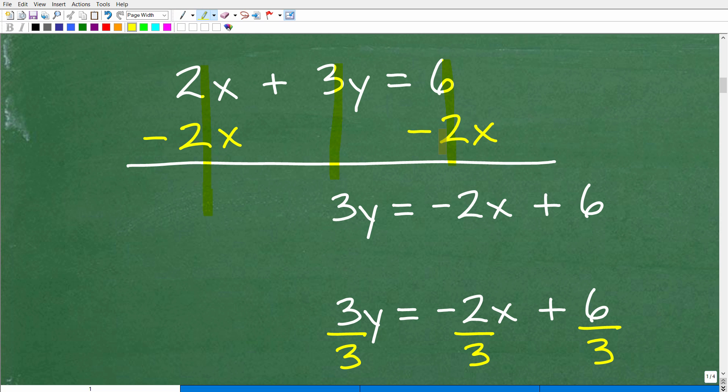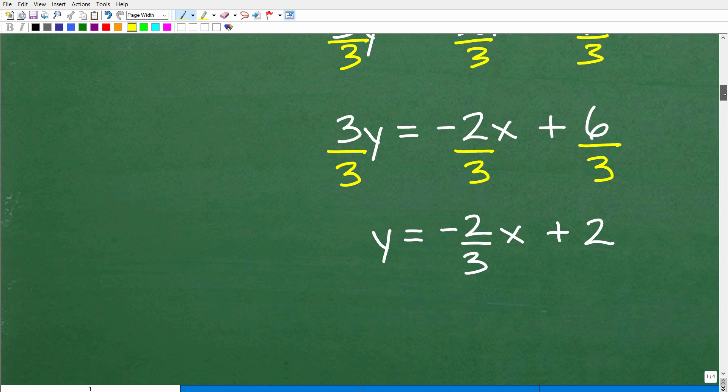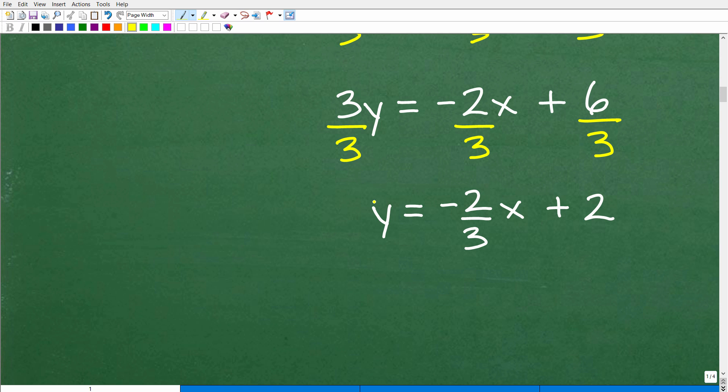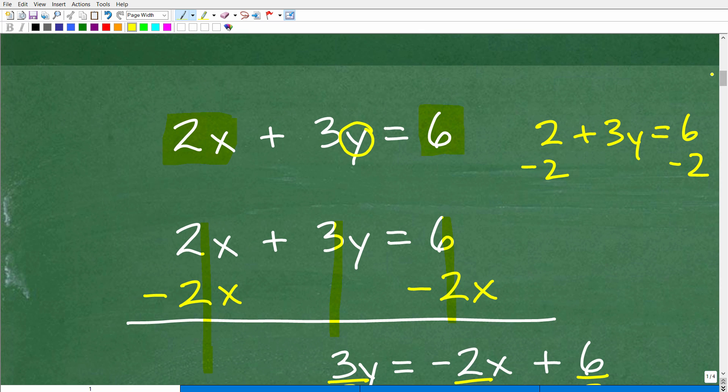And when I do that, I'm going to add down in a column manner. So 2x minus 2x is going to be 0. 3y plus nothing is 3y. And then here, this is 6 plus negative 2x, but I'm going to write the negative 2x first. So that's the same as negative 2x plus 6. So at this stage, this is pretty close. I almost have this equal to y, but I have 3y. So to get y by itself, I need to divide everything by 3. So that's what we have to do now. So 3 divided by 3 is y. That's what I wanted, or 1y. And now I have negative 2 divided by 3x. So we'll just leave that there. And then 6 divided by 3 is 2. So this is the answer.